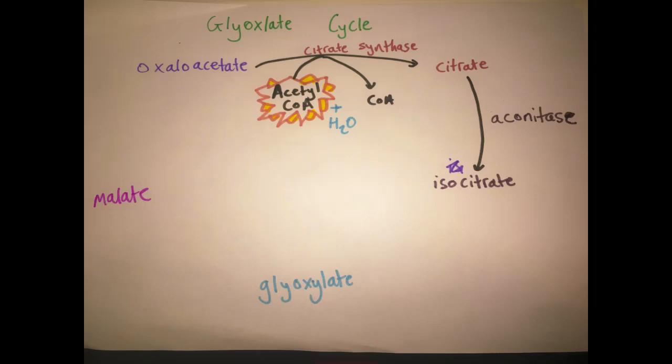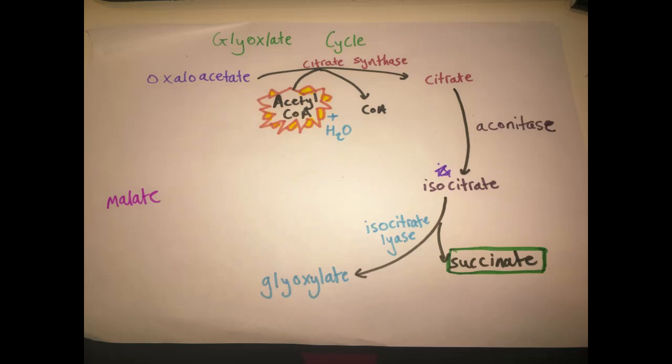Isocitrate is then cleaved by the enzyme isocitrate lysase to give succinate, which is one of the useful compounds gained from this reaction, and glyoxylate, which continues the reaction.